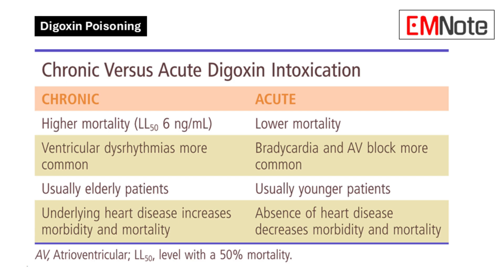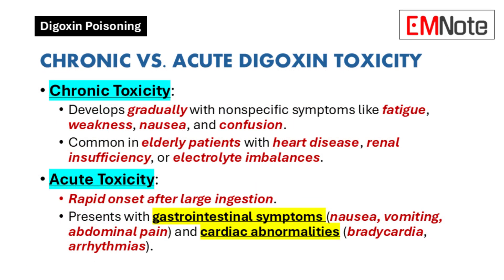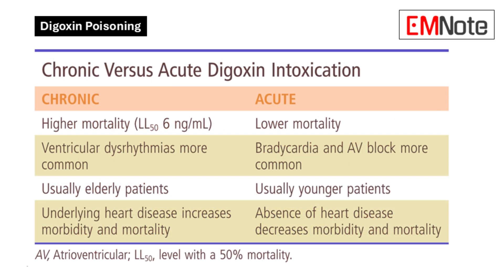Acute digoxin toxicity happens rapidly, usually after a large ingestion of digoxin. Patients typically have prominent gastrointestinal symptoms like nausea, vomiting, and abdominal pain. After those gastrointestinal symptoms, we see cardiac abnormalities like bradycardia and arrhythmias. So acute toxicity is more dramatic — it hits the gut first and then the heart.